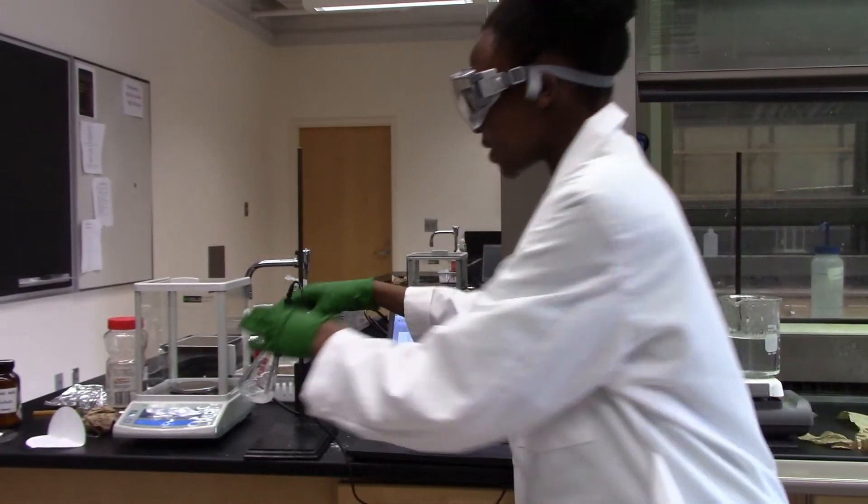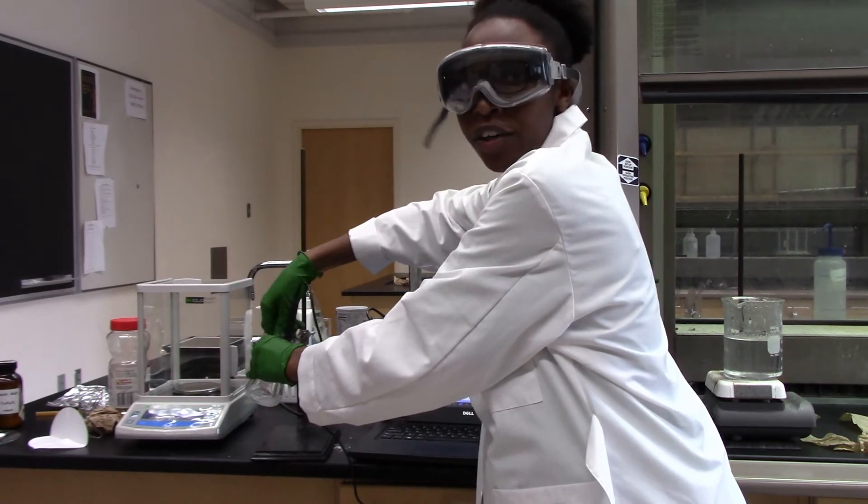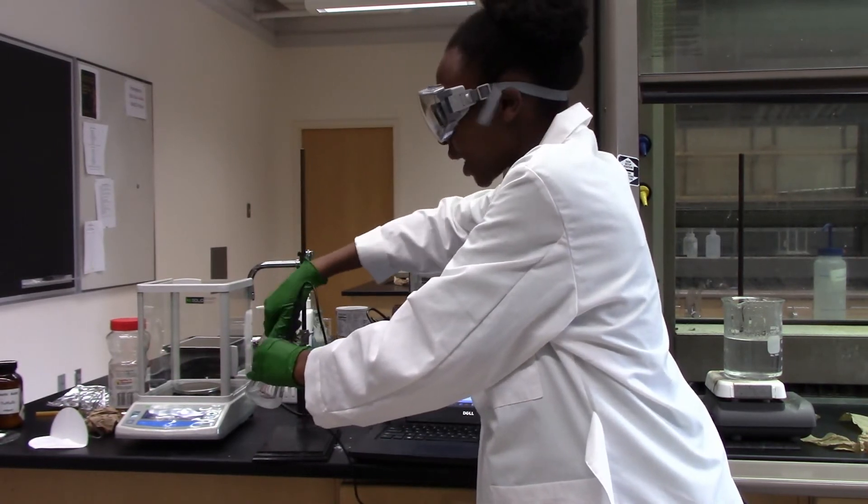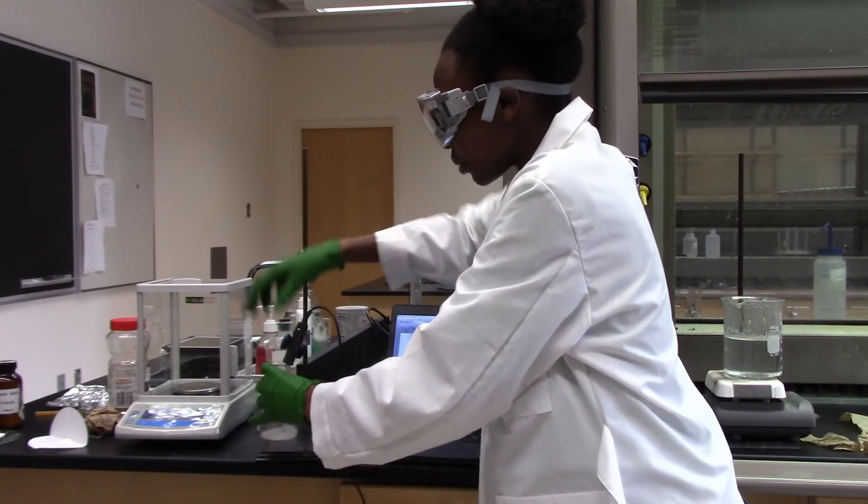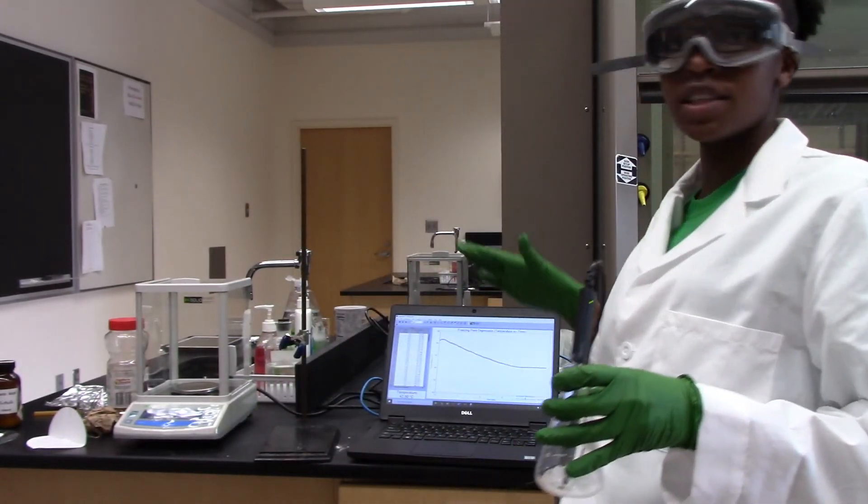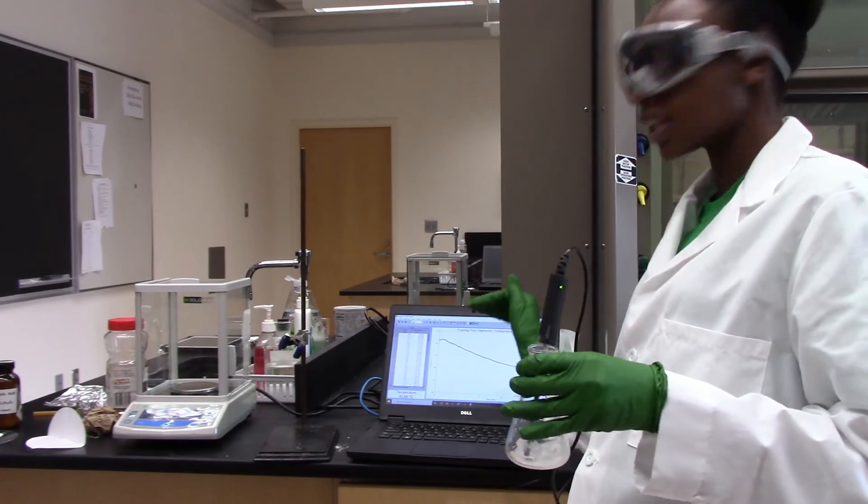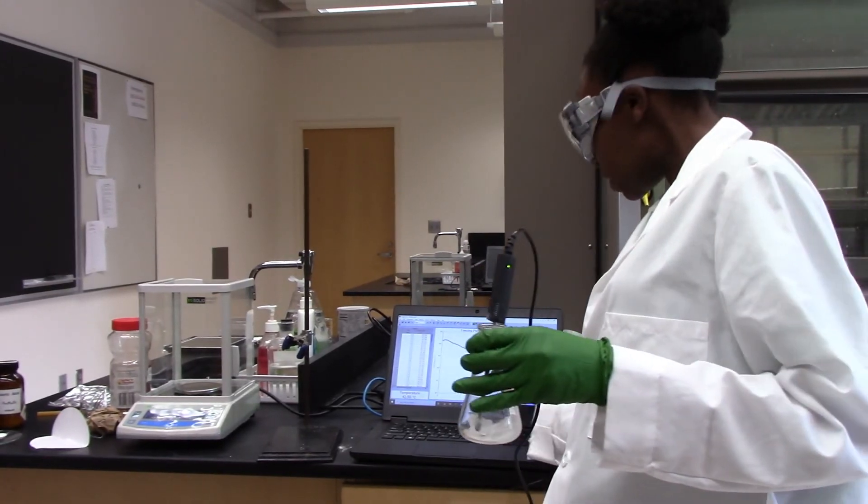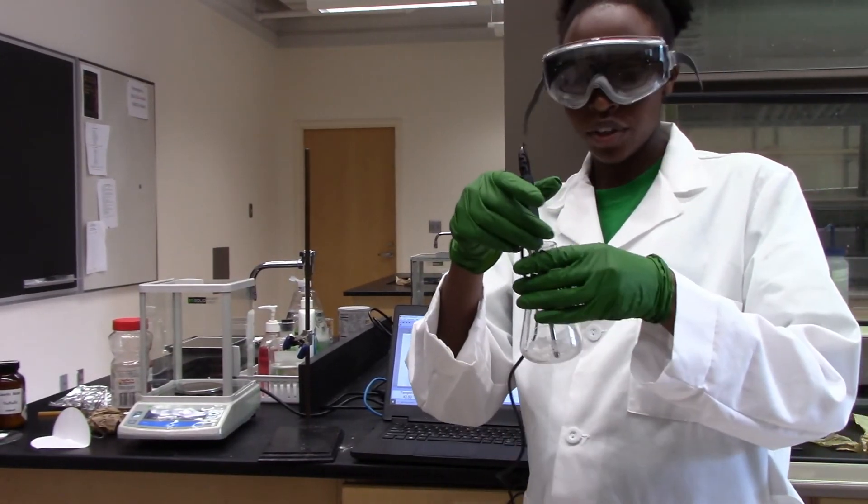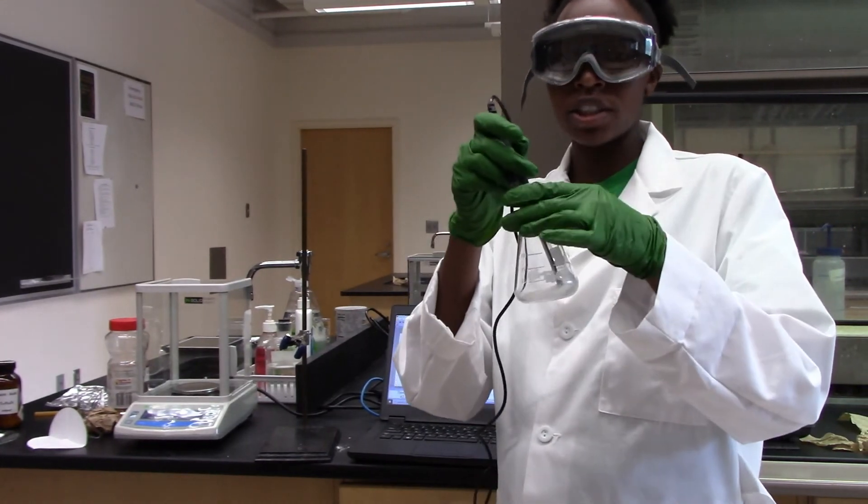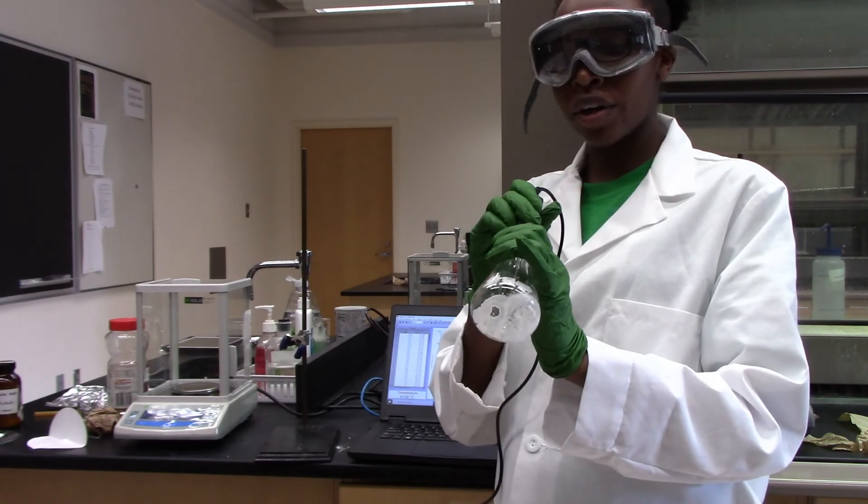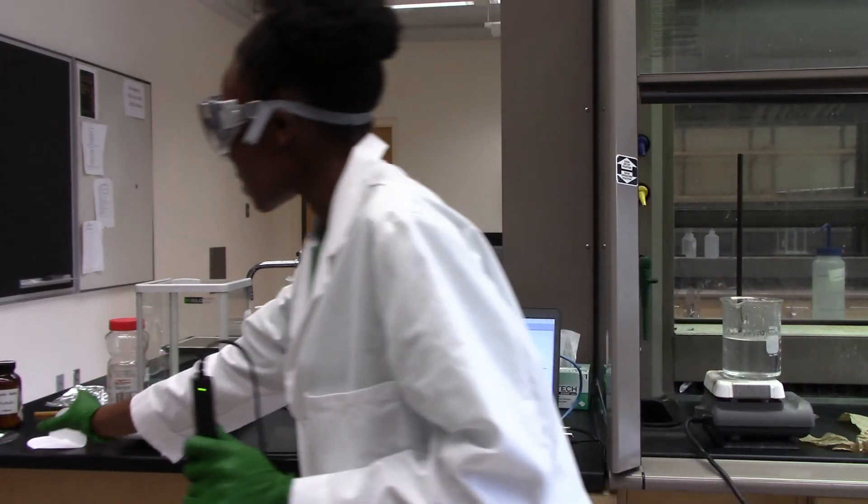Now we can see that our lauric acid has become a solid, so we have reached a constant temperature. Here, as you can see, the graph is slanted fast and then it levels off, so at this constant temperature is when you get your freezing point temperature for lauric acid, and it's a solid right now. So I am going to add my unknown to this.